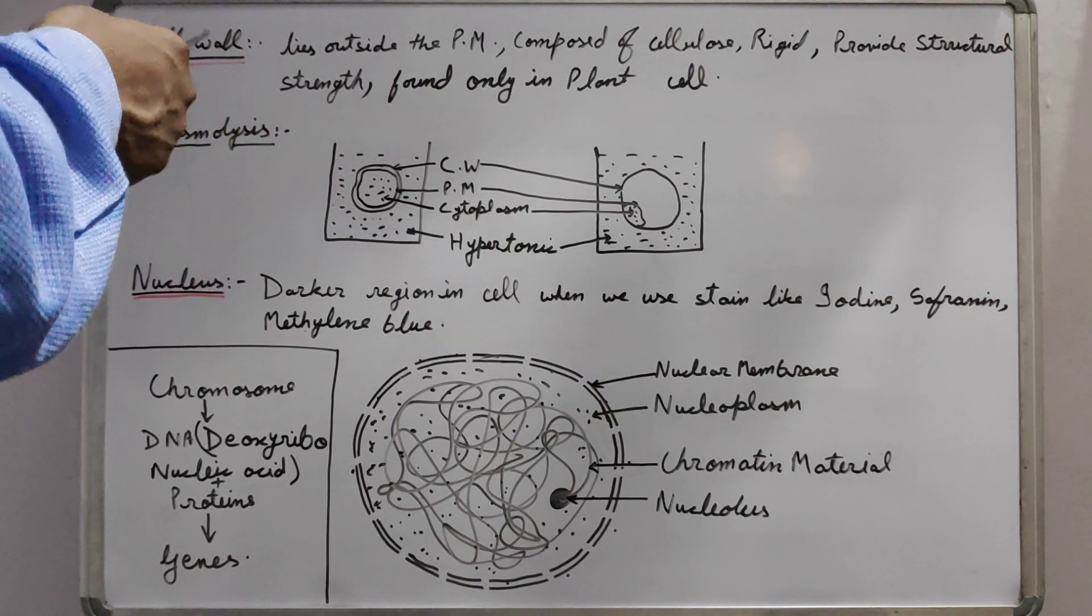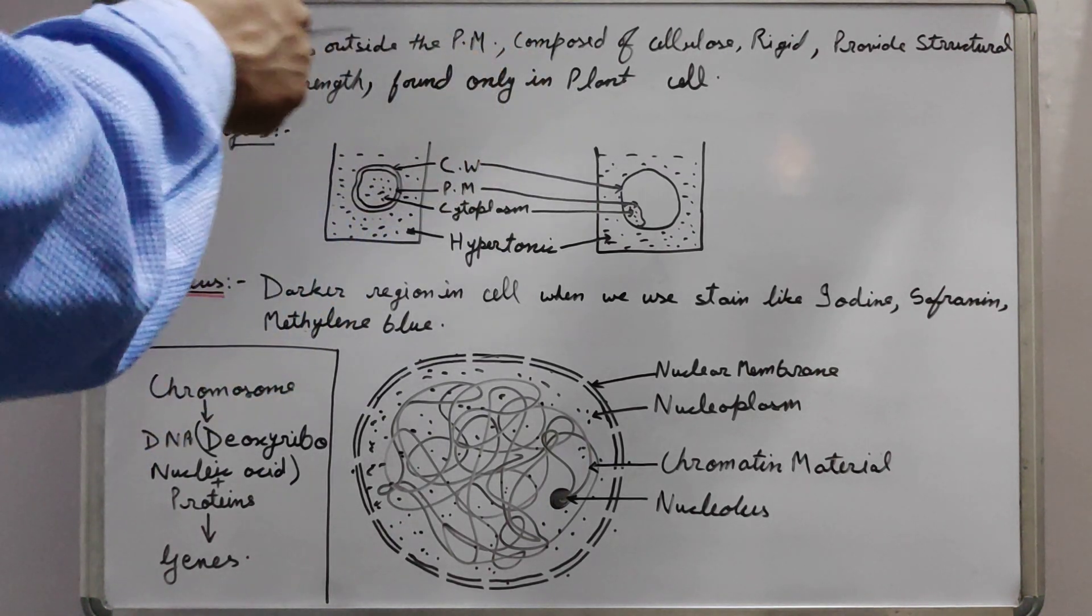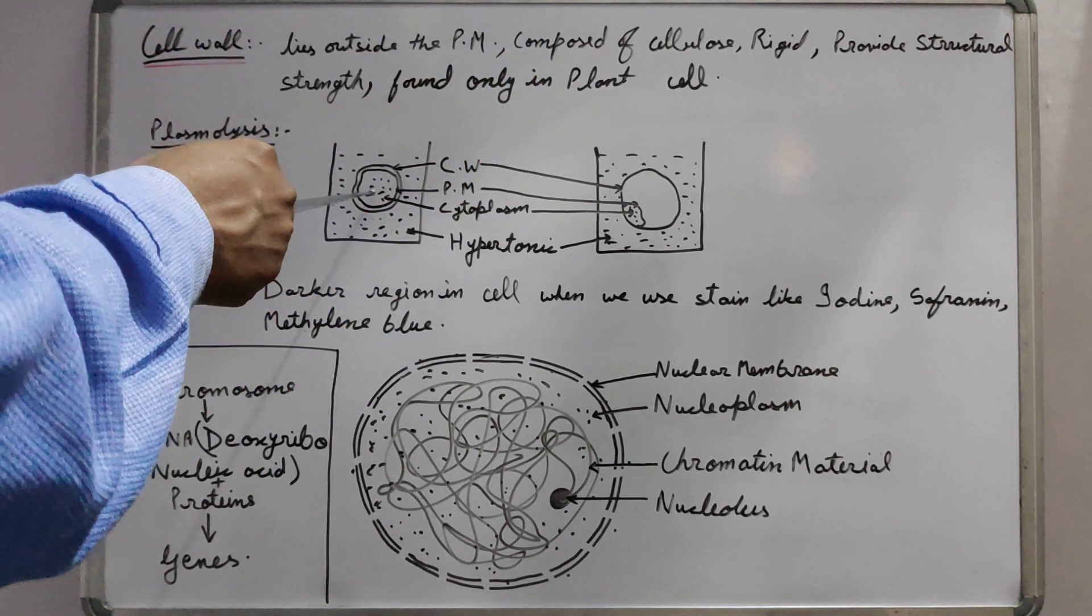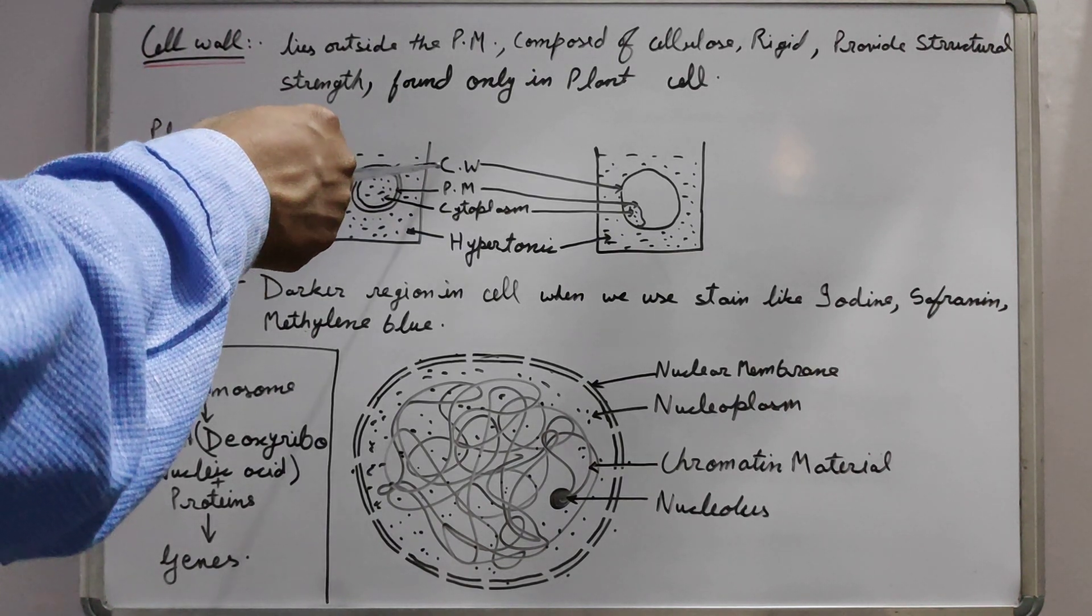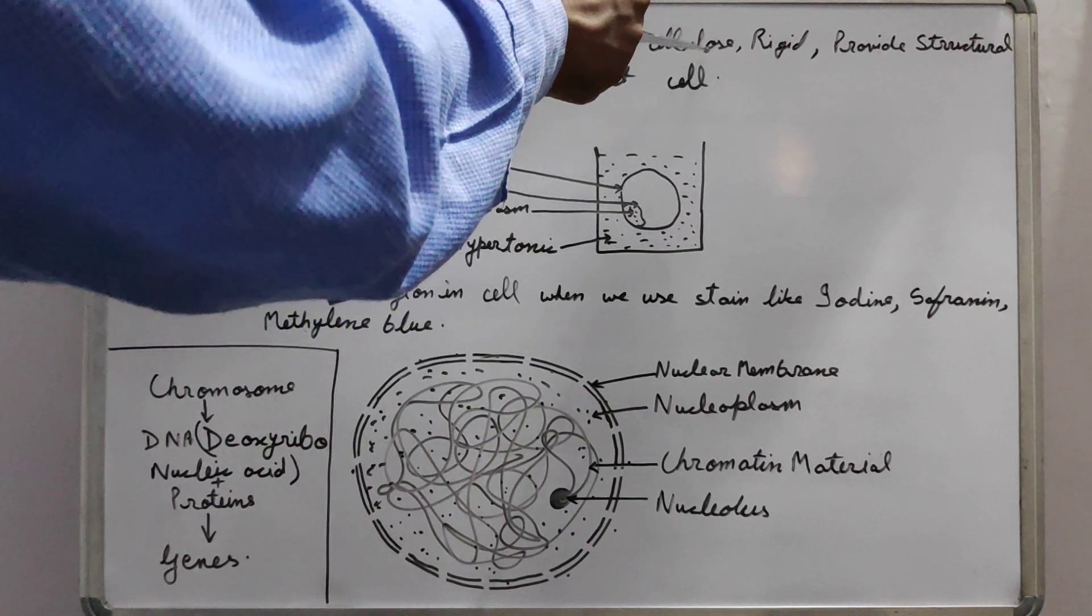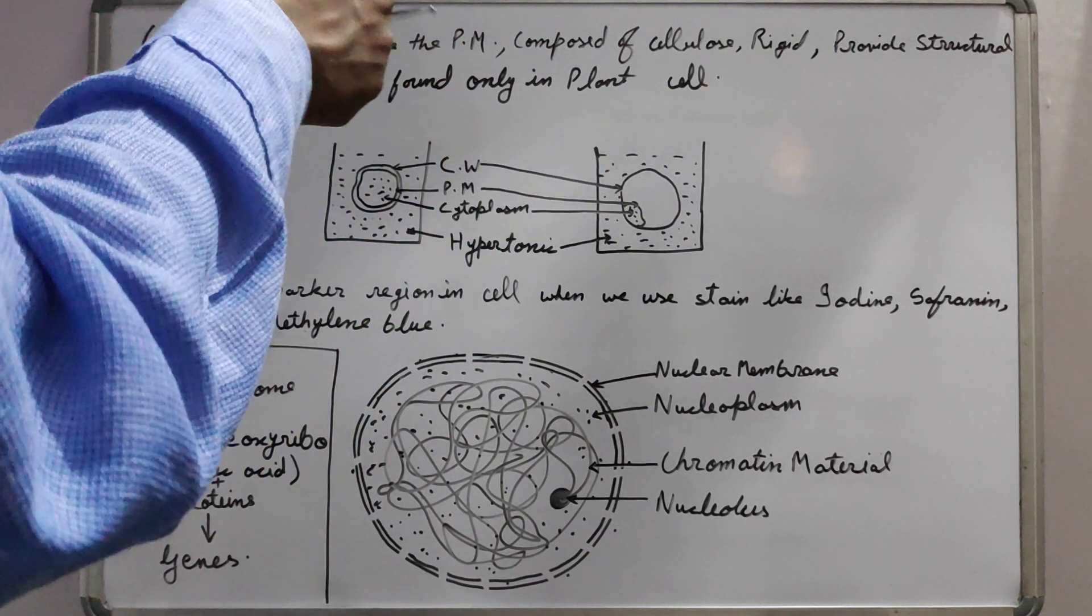Cell wall - it is present only in the plant cell and it lies outside the plasma membrane. If cytoplasm is covered with plasma membrane, then plasma membrane is covered by the cell wall. It is composed of cellulose, it is rigid and provides structural strength to the plant cell.